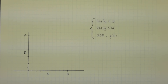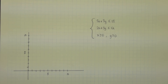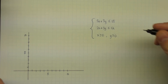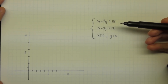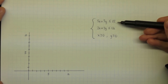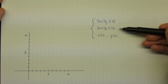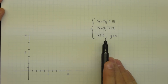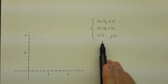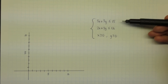To get an idea of what the graph of a feasible set looks like, we take our system of inequalities and graph them all on the same set of axes. So let's look at the same example. We have four inequalities: 5x plus 3y ≤ 15, 2x plus 3y ≤ 12, x ≥ 0, and y ≥ 0.